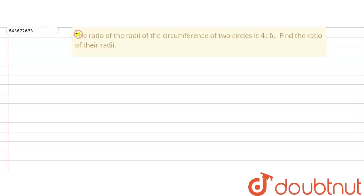The given question, the ratio of the radii of the circumference of two circles is 4 ratio 5. Then we need to find the ratio of their radii.